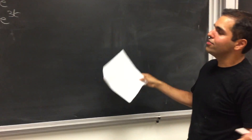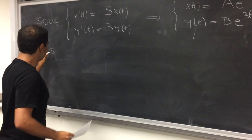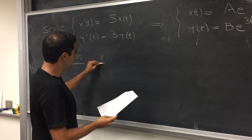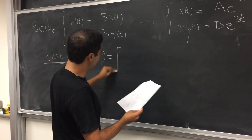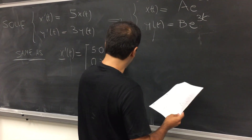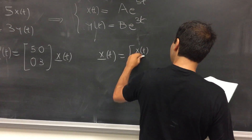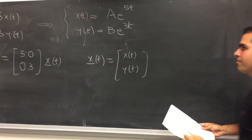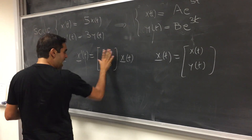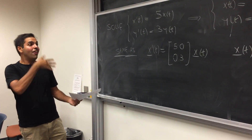Now let's see what that means in terms of linear algebra. Notice this is the same as writing the vector x prime of t equals the matrix [5, 0; 0, 3] times the vector x of t, where the vector x of t is just the vector of the two functions, x(t) and y(t). Systems with diagonal matrices, where things are uncoupled, are very easy to solve.